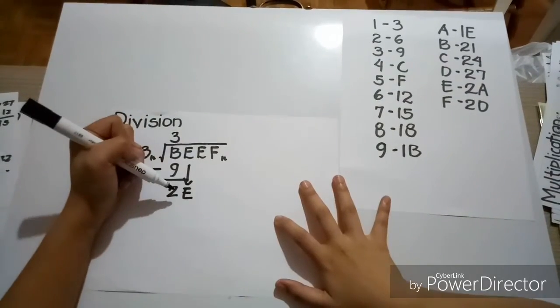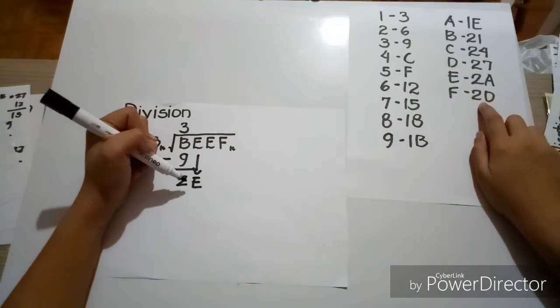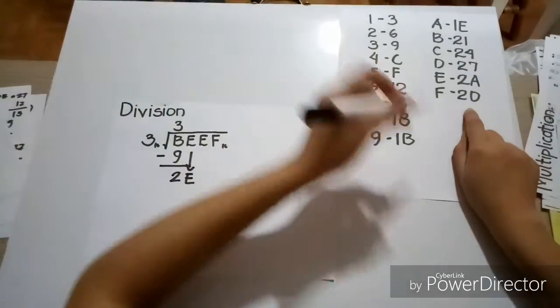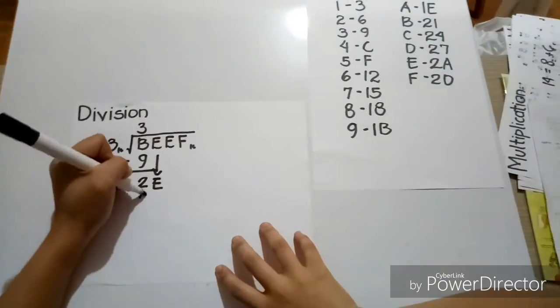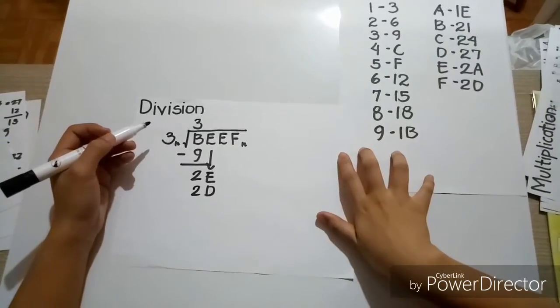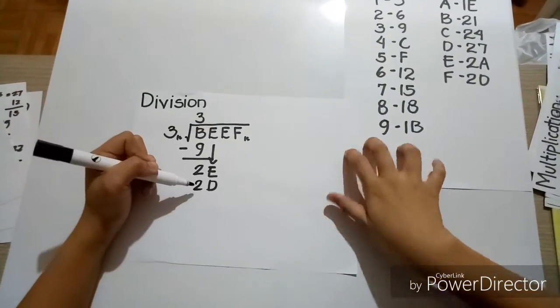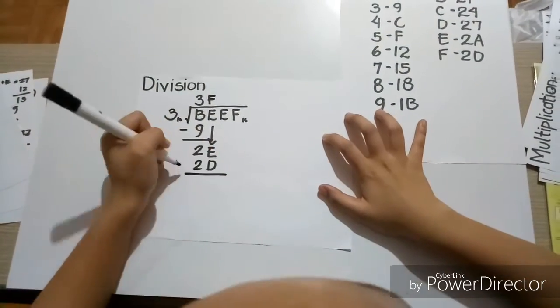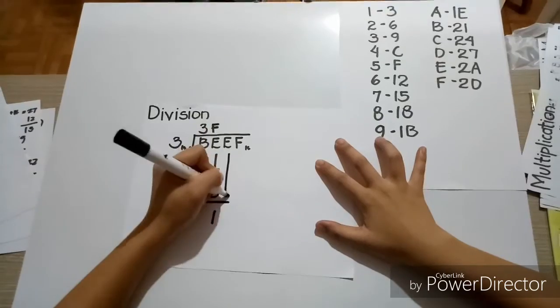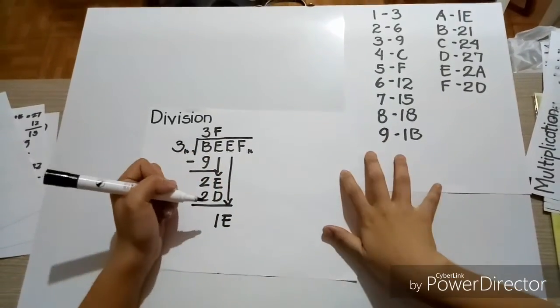Now, looking at here, basing it here, 2E is greater than 2D. So, let's write F. How many times is 3 into 2E? In here, it is F times, so we'll write F. And F times 3 is equal to 2D. So, if you're subtracting it, E minus D is equal to 1. So, 1 is going to come down.